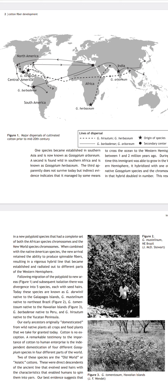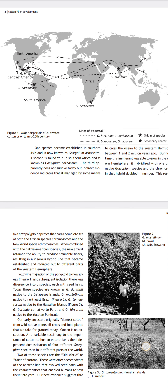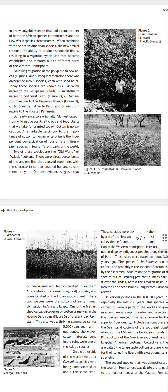Our early ancestors originally domesticated wild native plants — all crops and food plants that we take for granted today; cotton is no exception. A remarkable testimony to the importance of cotton to human enterprise is the independent domestication of four different Gossypium species in four different parts of the world. Two of these are Old World cottons, the Asiatic cottons, which are direct descendants of the ancient line. Gossypium herbaceum in southern Africa and Gossypium arboreum were probably domesticated in the Indian subcontinent.